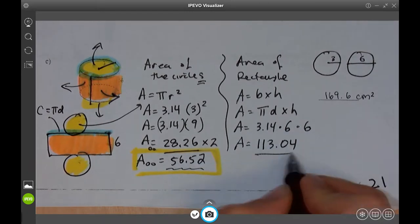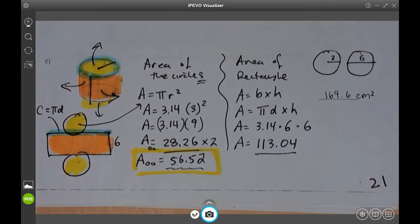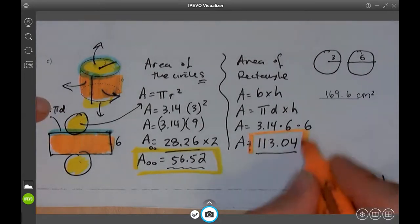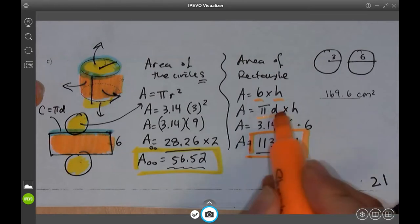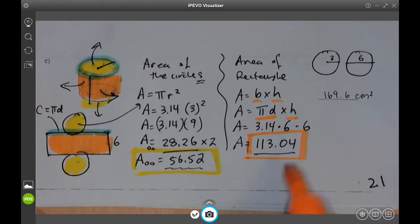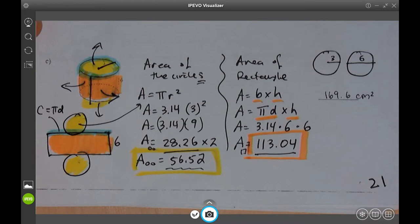Carry all those digits. This is the orange. That's that rectangle. Right? We had base times height. Our base was circumference times the height. We calculated that out and we got 113.04. Sometimes I put a little rectangle here to show me that that's the area of a rectangle or a little square.